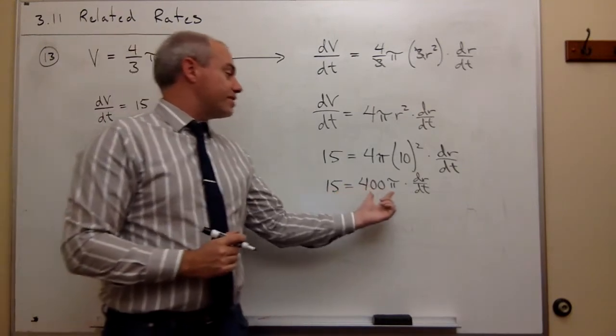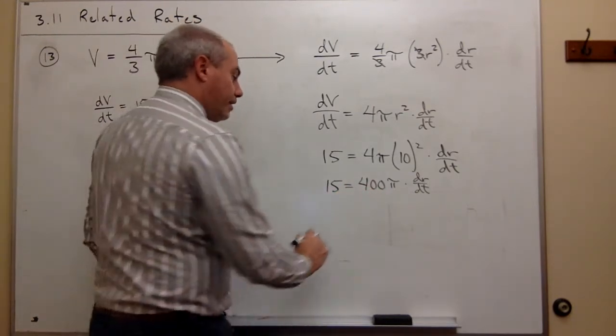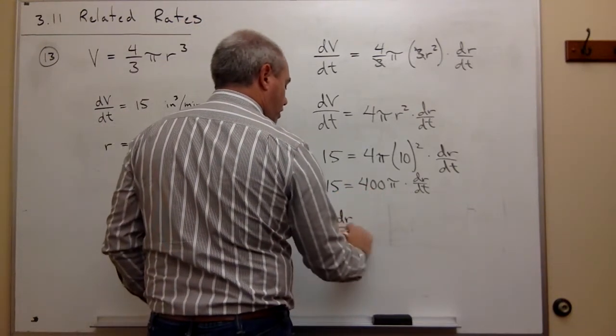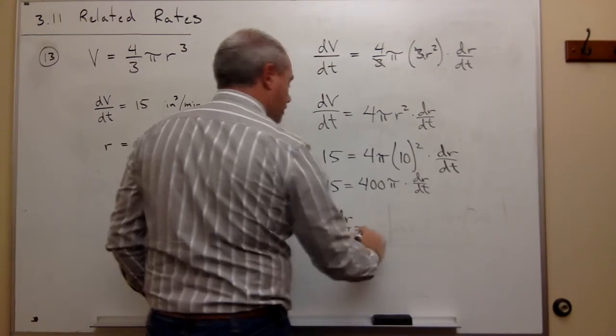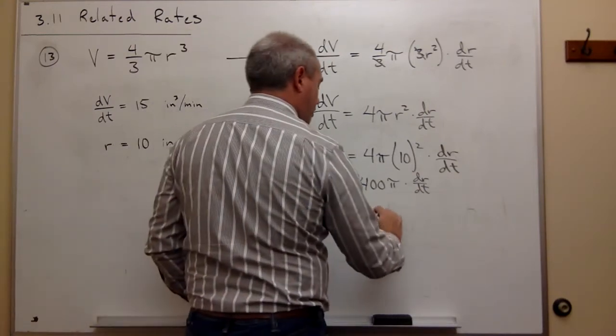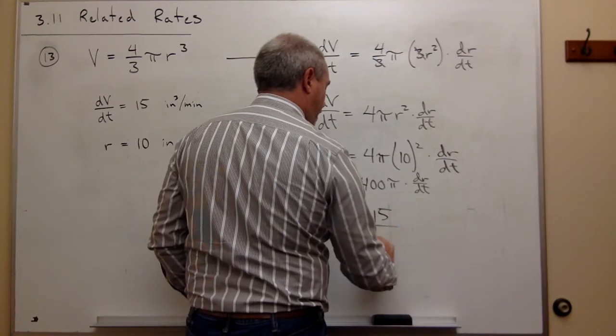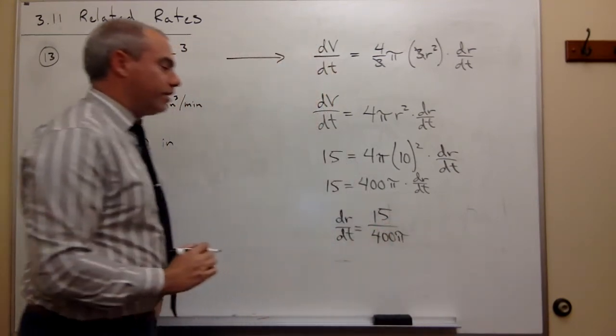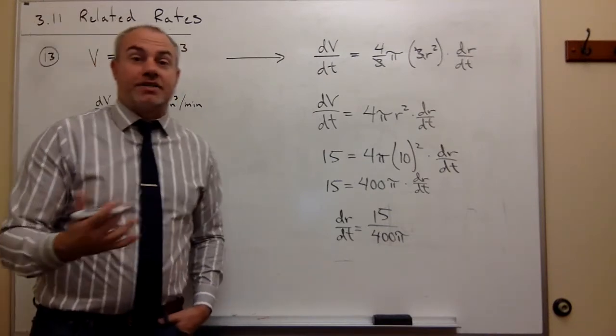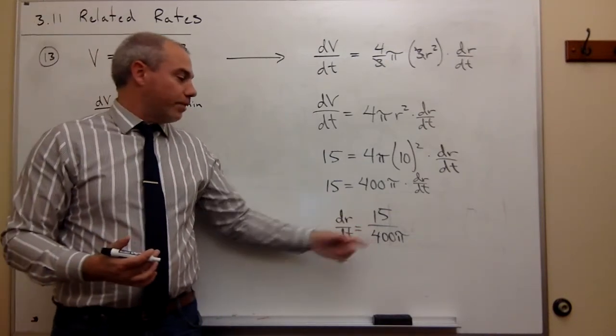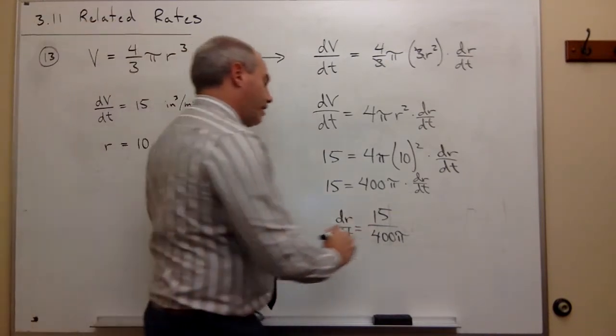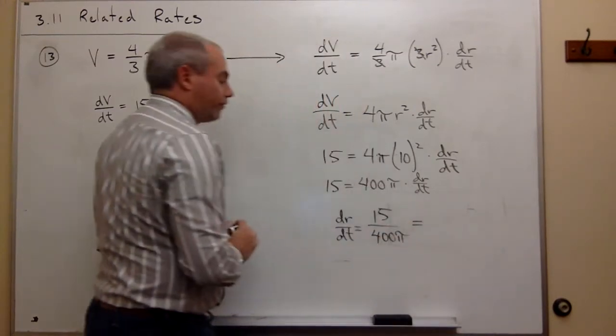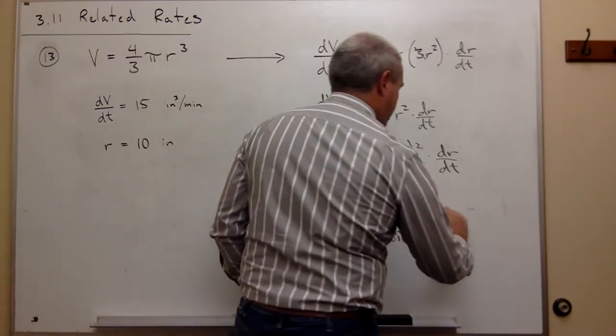Now I can divide both sides by 400π, and I get that dr/dt is equal to 15 divided by 400π. If you'd like to simplify that down a little bit, both the top and the bottom are divisible by 5, so I could write that dr/dt is 3 over 80π.